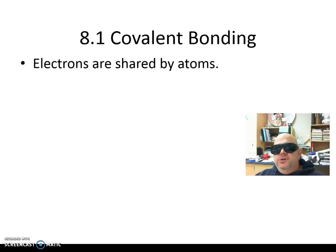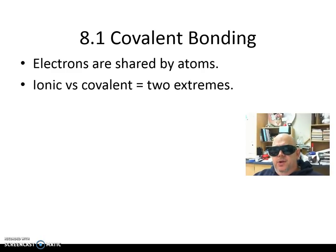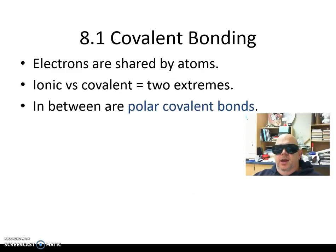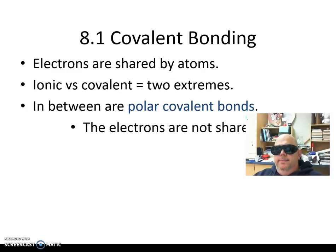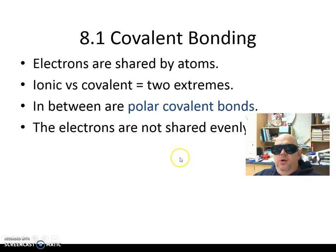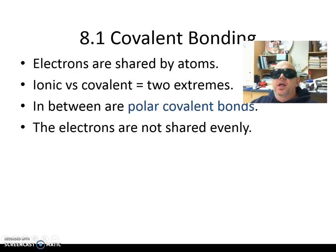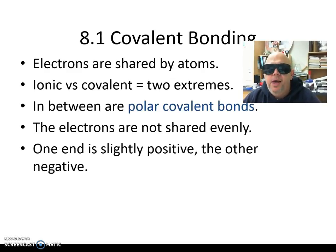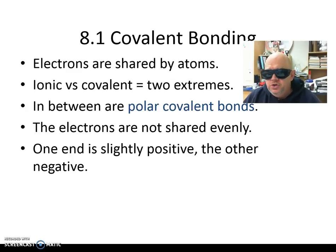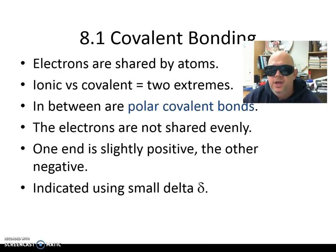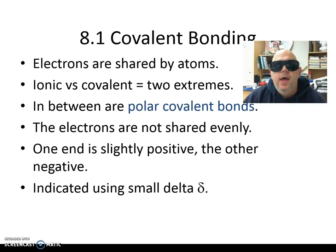Continuing on in covalent bonding: electrons are shared by atoms — this is not the same as ionic bonding. They are two extremes, ionic versus covalent. In between those two opposites, we have polar covalent bonds, where the electrons are not shared evenly. In pure covalent bonding there's equal sharing, and in polar covalent there's unequal sharing. One end is slightly positive and the other end is negative. You are dealing with positive and negative charges even within an atom. We indicate these small charges using the small delta.